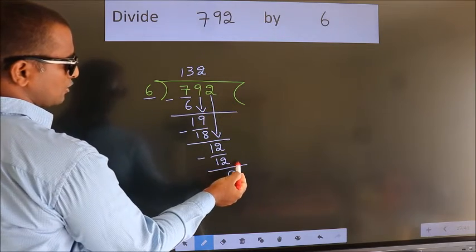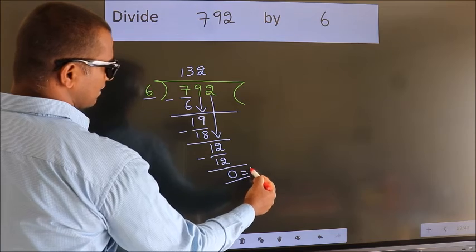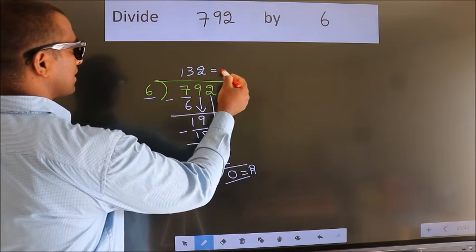No more numbers to bring it down. So we stop here. This is our remainder. This is our quotient.